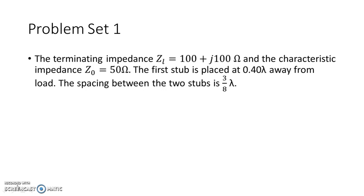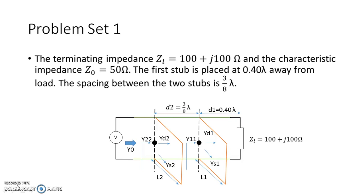To understand the technique more thoroughly, let us consider a problem. We have a load impedance of 100 + j100 Ω to be matched to a characteristic impedance of 50 Ω. The first stub is placed 0.40λ away from the load, and the spacing between the two stubs is 3/8λ. Three things are given: the load impedance, the distance of the first stub from the load, and the distance between the two stubs. We need to calculate YD1, YS1, L1, L2, YS2, YD2, and Y22.